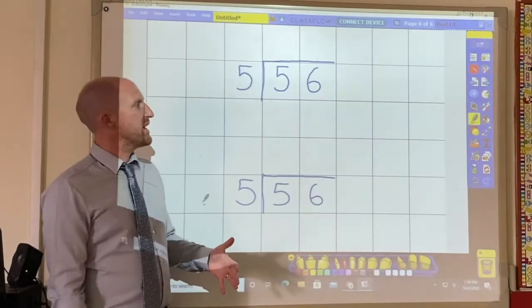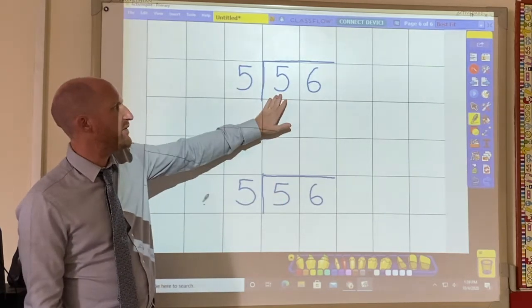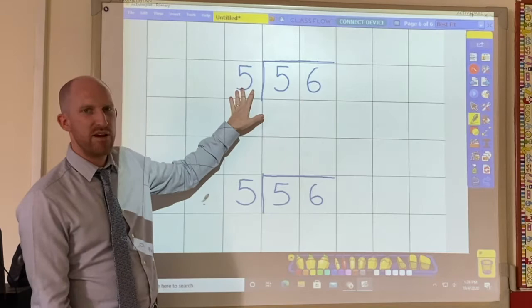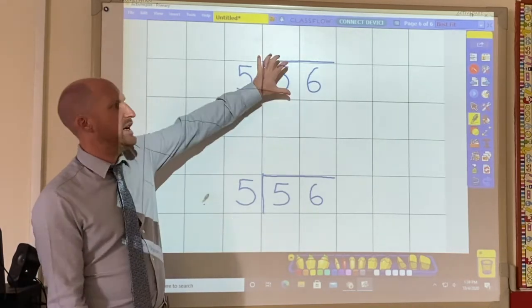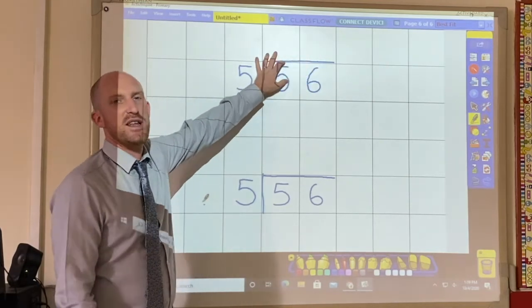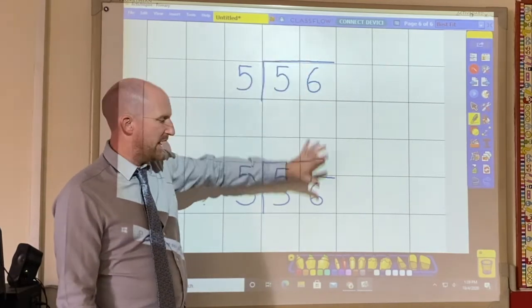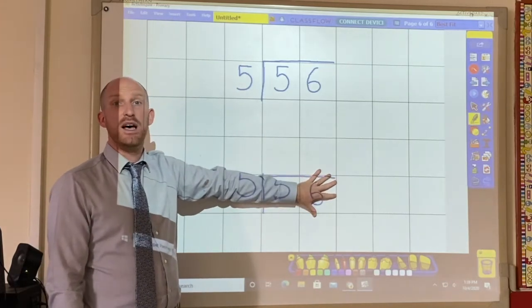So in front of me I have two questions. They're both exactly the same. I have 56 divided by 5. In this top short division question I am going to be presenting my answer as a fraction and in this bottom question I'm going to be presenting my answer as a decimal.